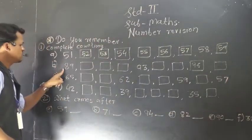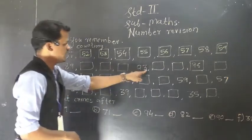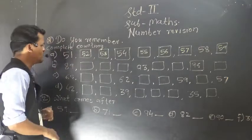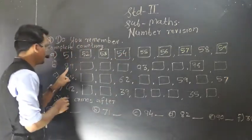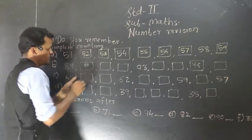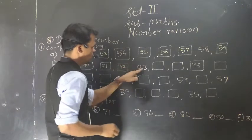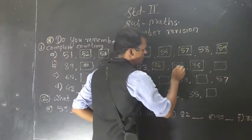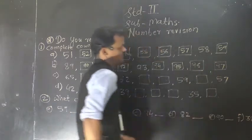Next question. See here: 89, here 93, 96. This is also forward counting because numbers are growing. So 89, after 89: 90, after 90: 91, 92, 93, 94, 95, 96, 97.